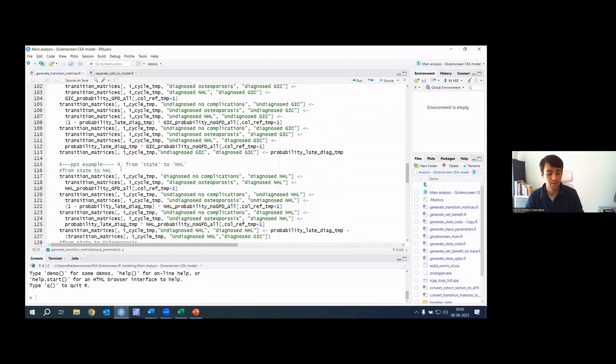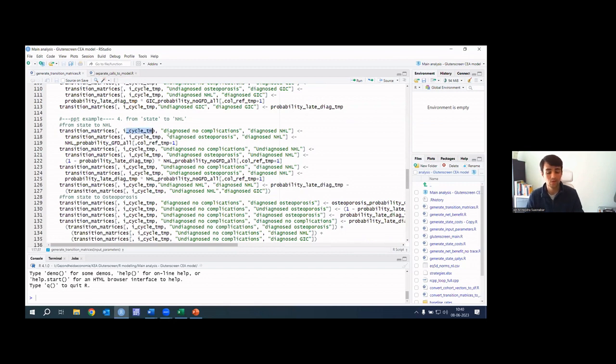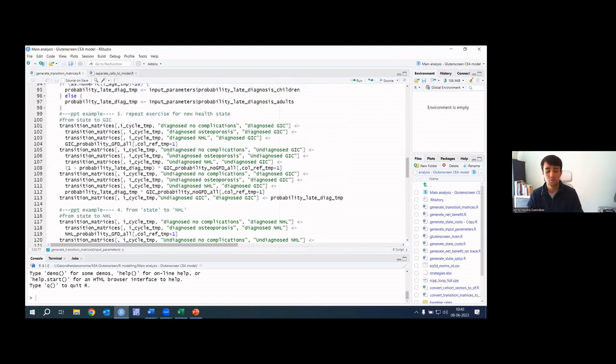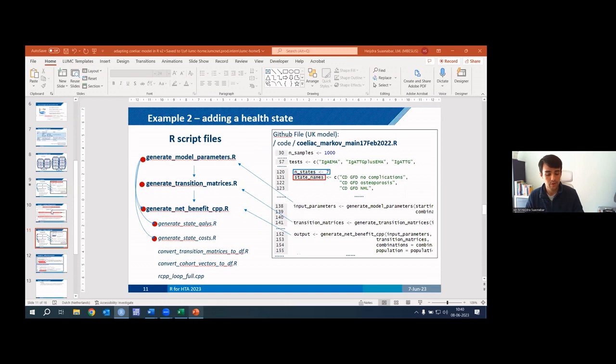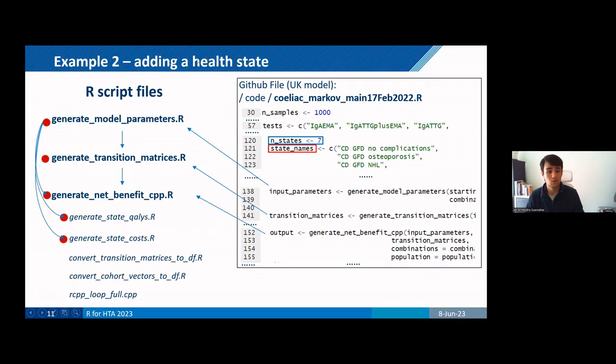And well, this is the new health state. But here you can see that for a cycle, then you have a transition from one state to another, from one state to another. And at each cycle or age group, you're pulling the correct transition probabilities. And you can already see that what you would need to do is simply repeat this exercise for your new health state. Just making sure that you're pulling the correct probabilities of the correct age group or cycle and also adapting the other transitions that are influenced by this addition of the new health state. And then you would redo this exercise with the cost and the qualities related to your new health state. So that's related to adding a new health state.